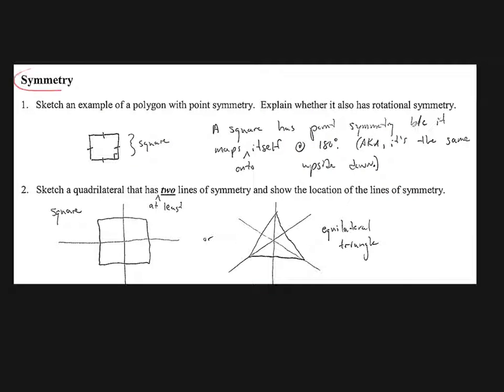So we have some symmetry. Sketch an example that has point symmetry, and then tell me whether or not it has rotational symmetry. So I drew a square, and I said a square has point symmetry because it maps onto itself at 180 degrees, or you could say that it looks the same upside down. And I did not mention if it had rotational symmetry, but I guess a good way to clarify now that yes, it does have rotational symmetry because it looks the same at 90 degrees, at 270 degrees. And at 180 degrees, automatically, if it has point, it immediately has rotational. So I forgot to write that part down. You can sort of write that in that space.